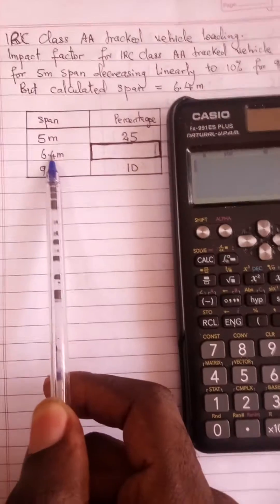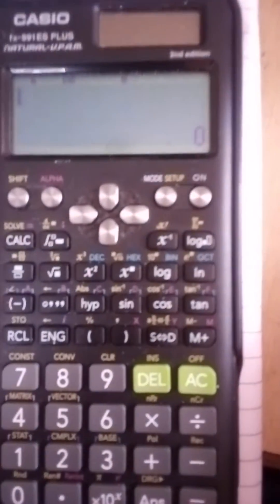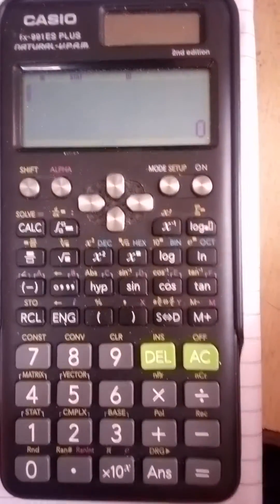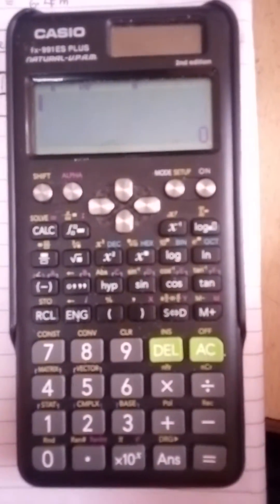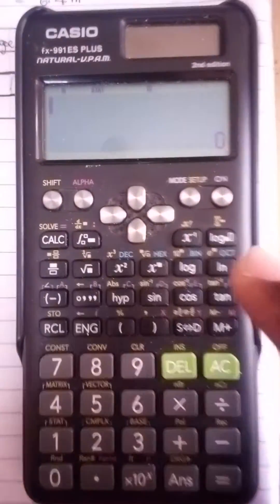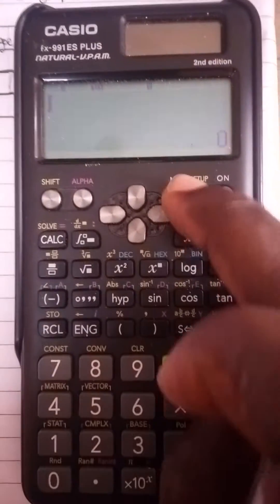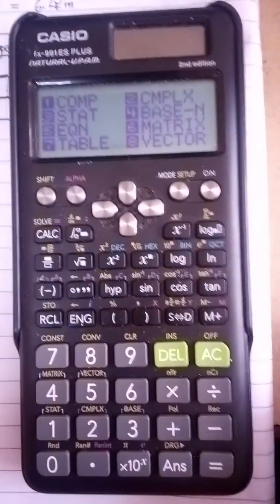I will now come to my calculator. This is the normal mode of the calculator, fx-991 ES plus. With that, I will start by clicking this mode and from there I will press 2 which stands for statistics.